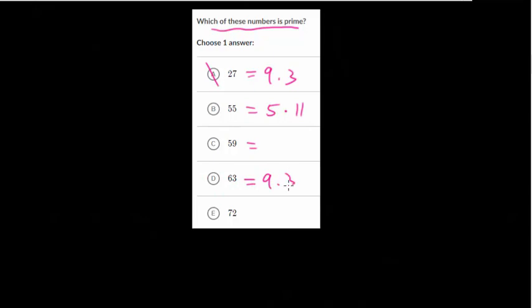Now 59 we aren't sure about because nothing is jumping out at me that would evenly divide into it, so probably this one's prime. I'm going to come back to it. 63 I know is a product of 9 and 7, and 72 is a product of 9 and 8, so it's got to be C, it's the only one left.